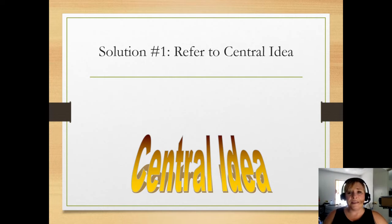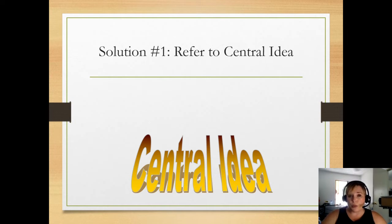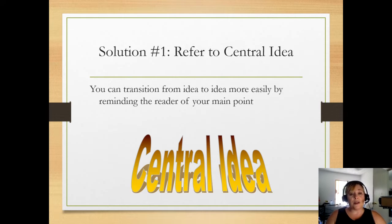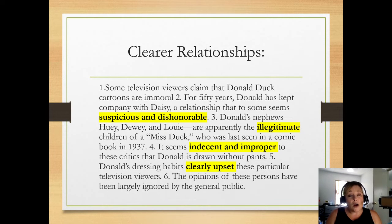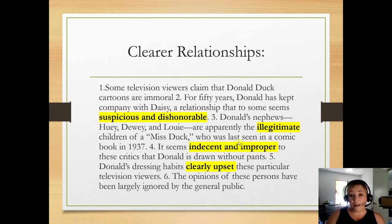So how do we fix this paragraph? The first solution is to keep referring back to the central idea or the main idea. This goes for both a paragraph and eventually an essay. Keep bringing back that central idea even when you think it's redundant, so you can transition from idea to idea more easily by reminding the reader of your main point. Here are a lot clearer relationships — all the author really did was add a few instances where he or she refers back to the central idea, and you can see how much better this paragraph gets.